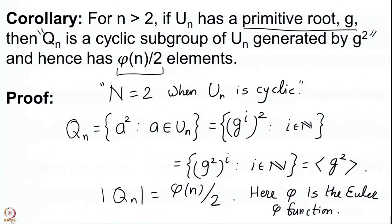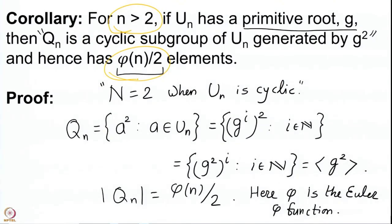There is one small thing to draw attention to: we are taking n to be bigger than 2. If n = 2, that is the case we are avoiding everywhere; u₂ has only one element, and although the primitive root g = 1 is itself a square, this statement would not be quite true. So we must take n bigger than 2, because then we know φ(n) is going to be an even number. For every n > 2, the Euler phi function is always even. Once we have this, the rest follows quite nicely.